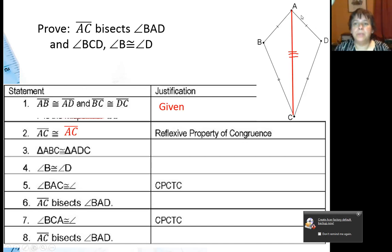that this side is congruent to that, and BC is congruent to DC, and AC is congruent to AC. Well, now I've proven that these two triangles, ABC and ADC, are congruent to each other using the side-side-side theorem.